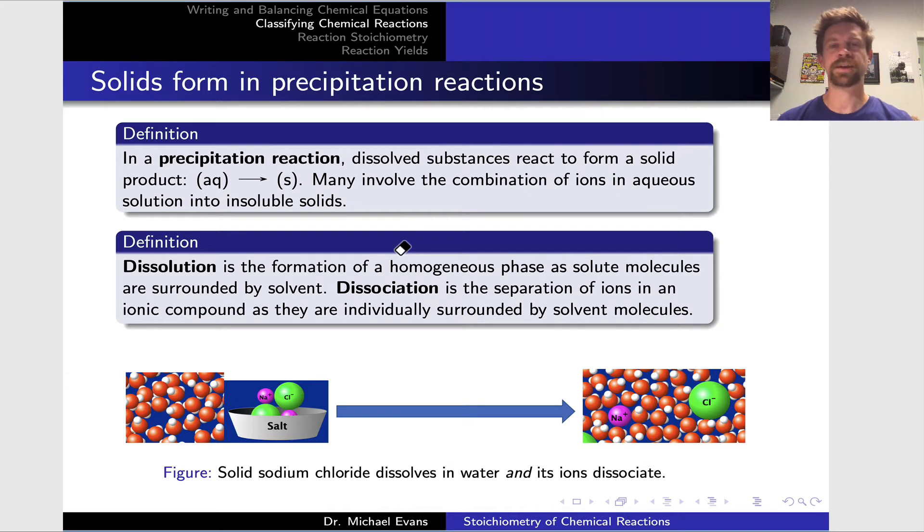Let's begin with precipitation reactions. In a precipitation process, dissolved substances combine to form a solid product. If we're talking aqueous solutions, we'll see the aqueous state designator on the reactant side and a solid state designator on the product side. Many of these reactions involve the combination of ions in aqueous solution to form insoluble solids.